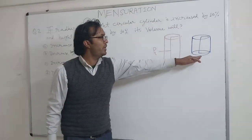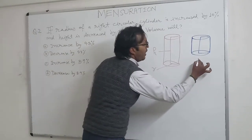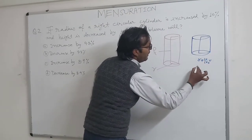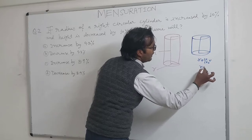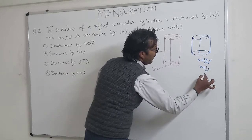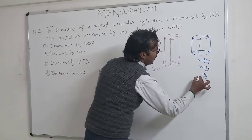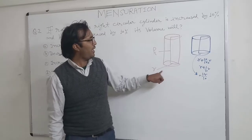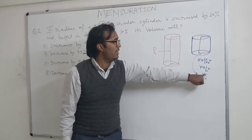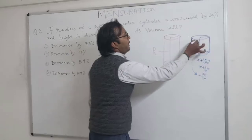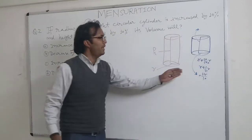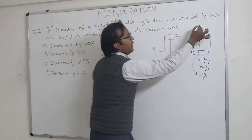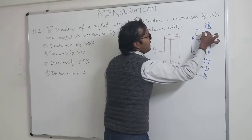The change in radius means R plus 10% of R, which is R plus (1/10)R, giving us 11R/10. Similarly, if the height decreases by 10%, the new height becomes 9H/10.